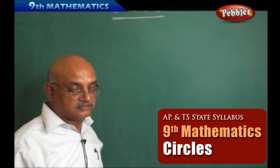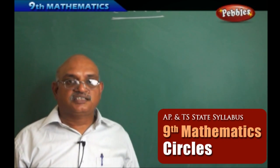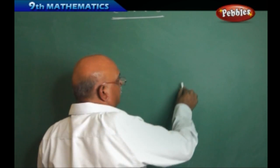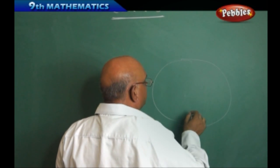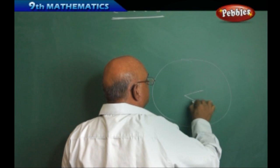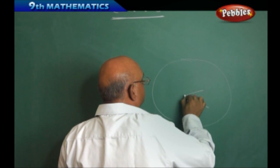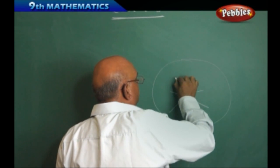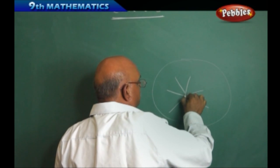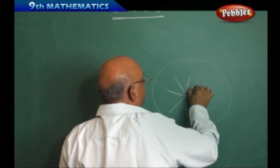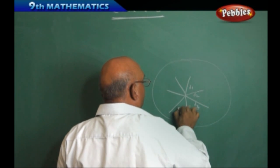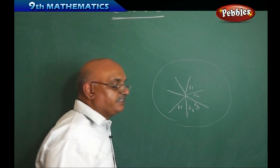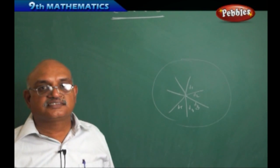What do you mean by a circle? If you look into this particular chapter — suppose if you take any surface and there are certain points, if I take any fixed point and collect the distances from those points, every distance should be uniform. That implies, if I have distances D1, D2, D3, D4, and D5, all these distances are the same.